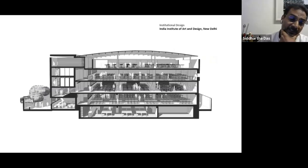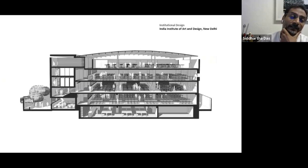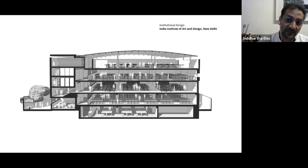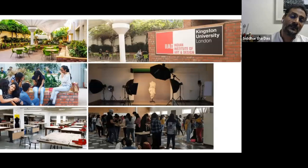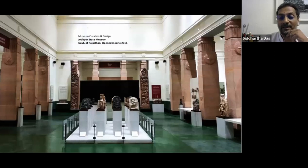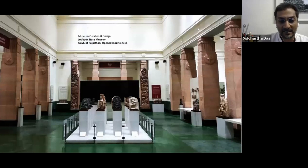There were also institutional projects. In 2013-14, I worked on the Indian Institute of Art and Design in Okhla — a warehouse of 60,000 square feet that we reimagined and adapted to become a design college. With the whole complexity of institutional design came amazing challenges, and the idea was to use those learnings for other cultural spaces.